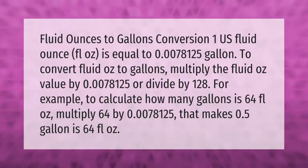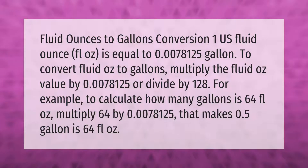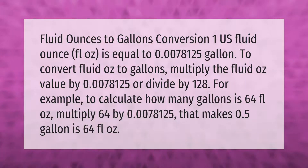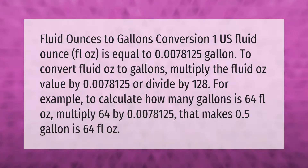Fluid ounces to gallons conversion: 1 U.S. fluid ounce is equal to 0.0078125 gallon. To convert fluid ounces to gallons, multiply the fluid ounce value by 0.0078125, or divide by 128.